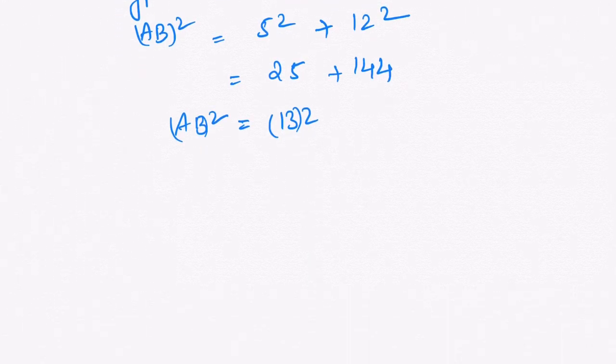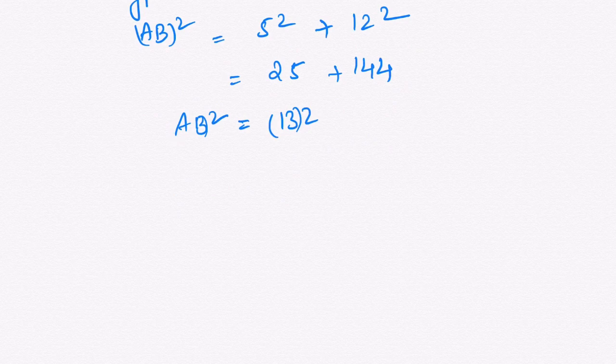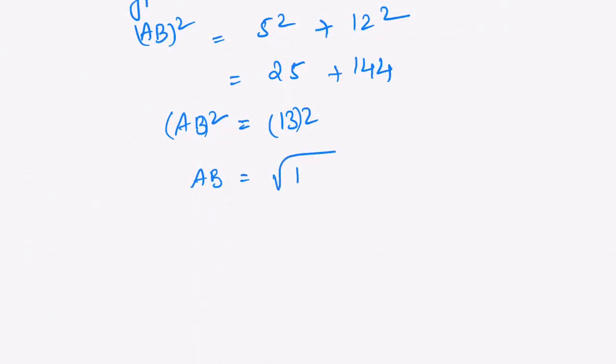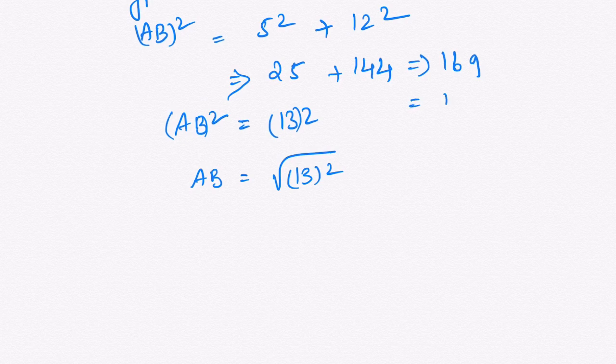AB squared equals 13 squared, so square gets cancelled. Or you can also write it as AB equals square root. Now square goes to right hand side, it becomes square root of 13 squared, because this is 169. 25 plus 144 is nothing but 169, which equals 13 times 13.